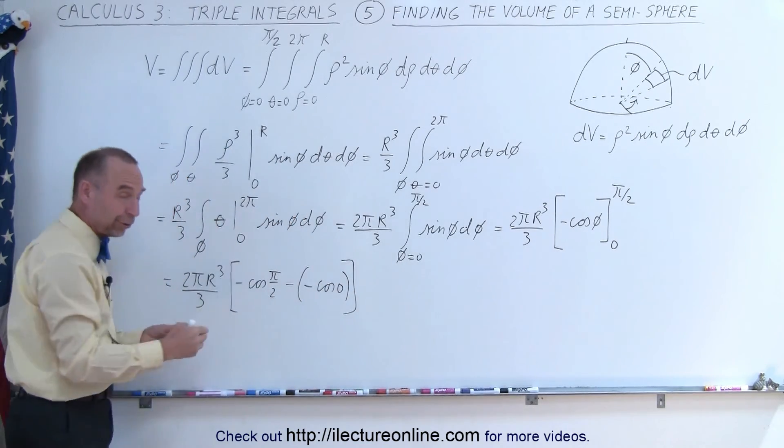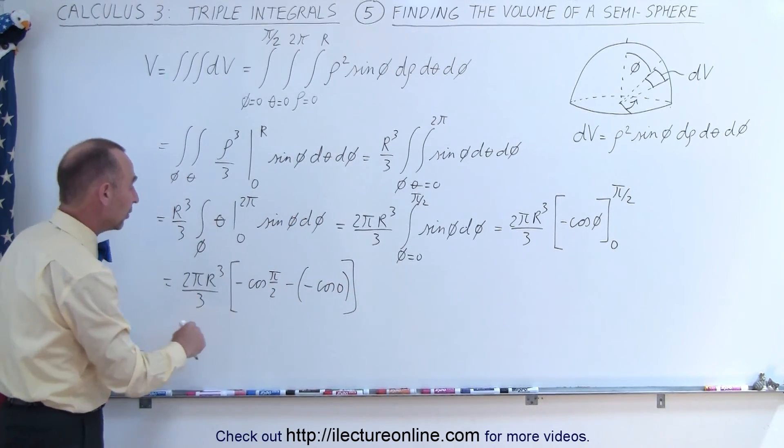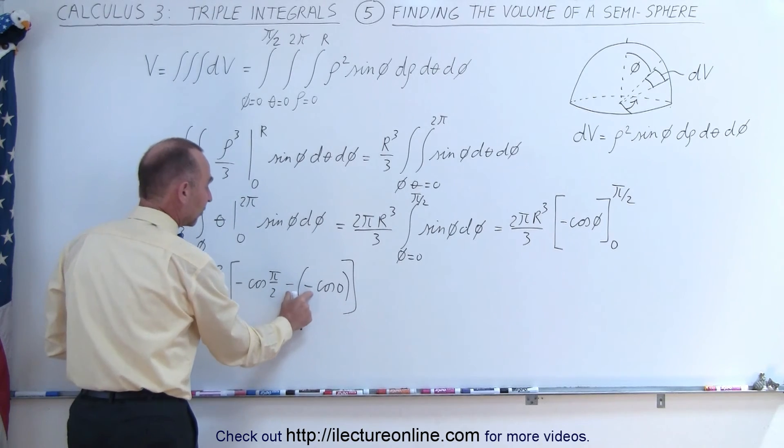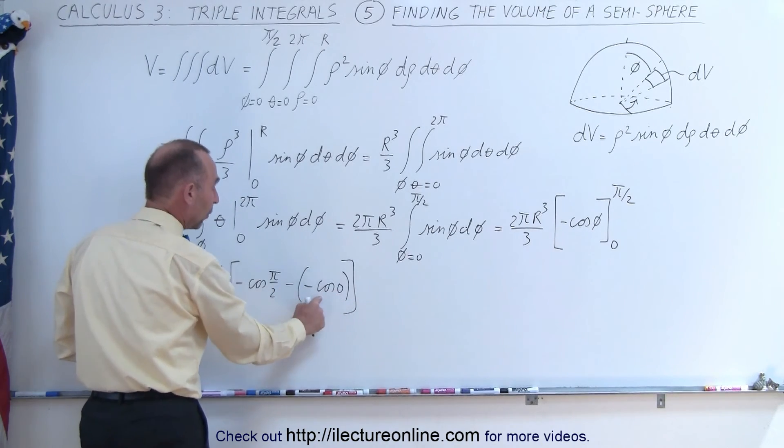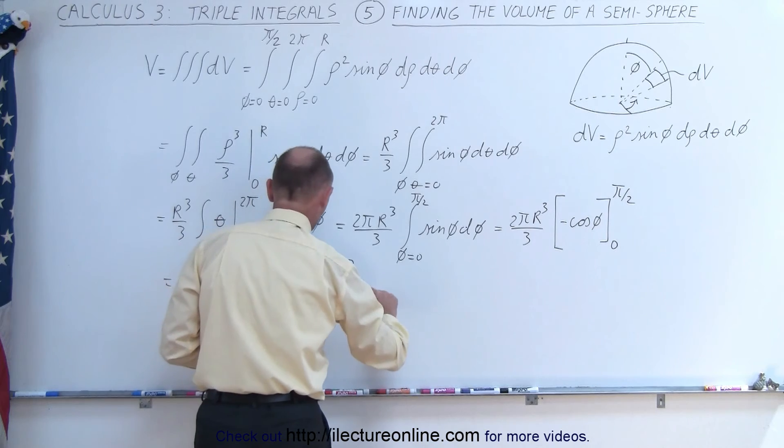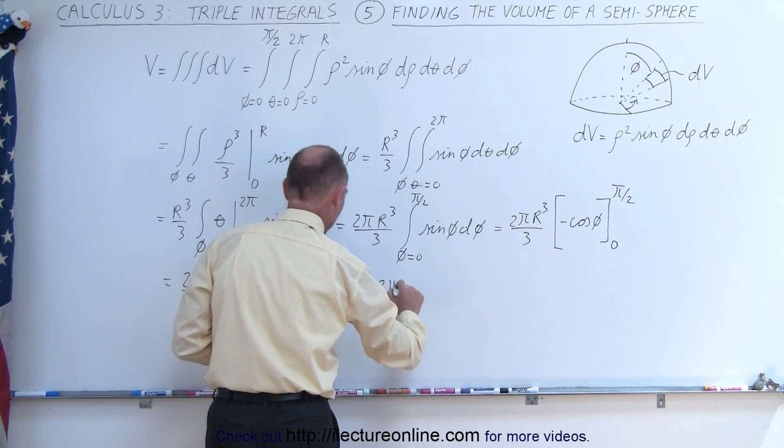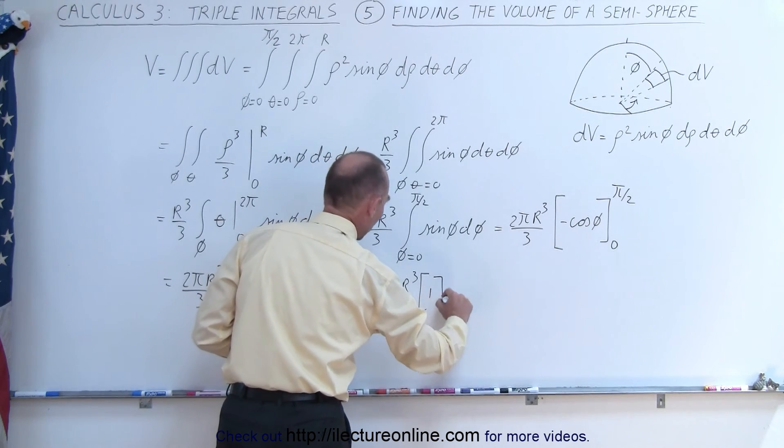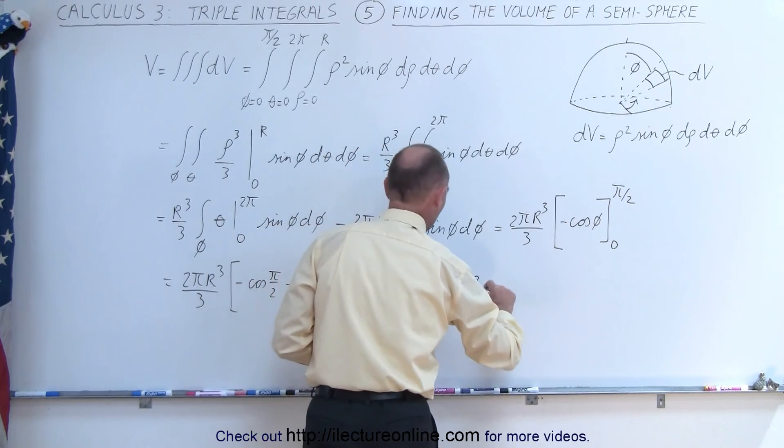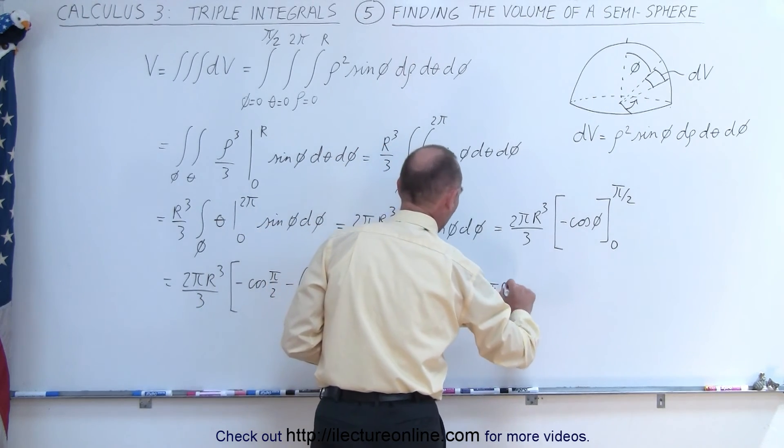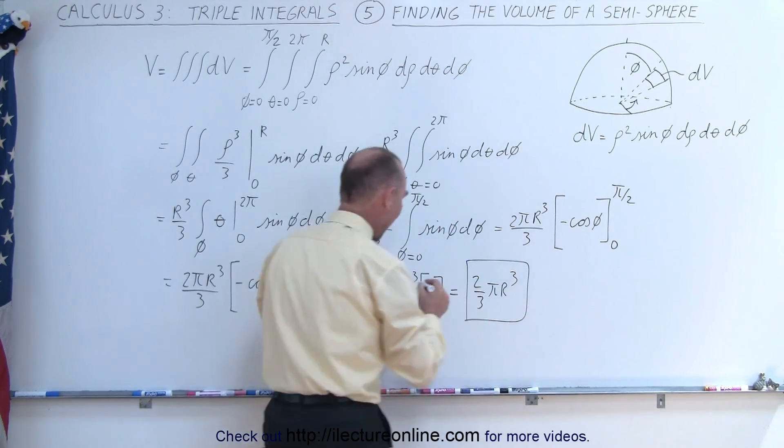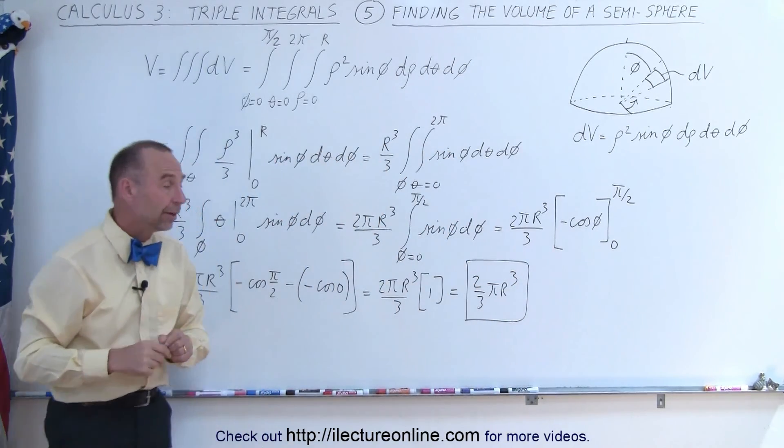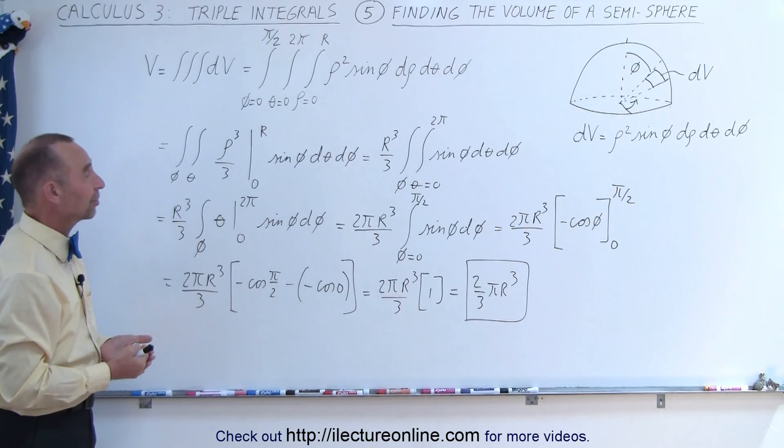Notice the cosine of pi over 2, that's 90 degrees, that will be equal to 0, and the minus times the minus gives us a plus, and the cosine of 0 is 1. So, indeed, it is equal to 1, so we get 2 pi r cubed over 3 times 1, or it's going to be 2 thirds pi r cubed, which is, of course, exactly half the volume of a full sphere, which means we found the correct answer.